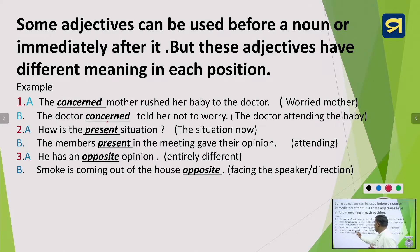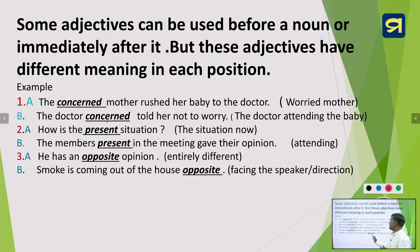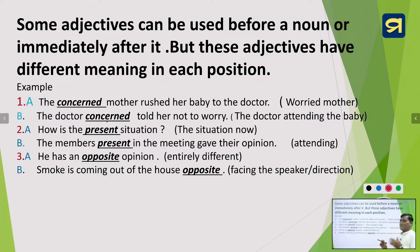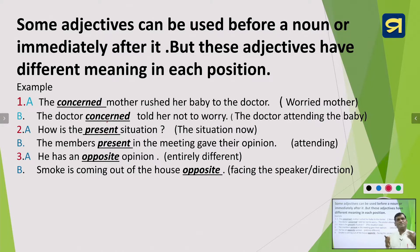Third example: 'He has an opposite opinion' and 'The smoke is coming out of the house opposite.' The same adjective 'opposite' is used before and after the noun with different meanings. 'Opposite opinion' means an entirely different opinion that differs from person to person. 'The house opposite' refers to a direction or side facing the speaker. So the same adjective can have different meanings depending on its position.